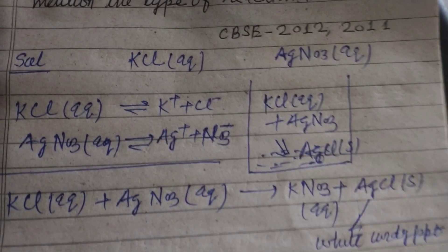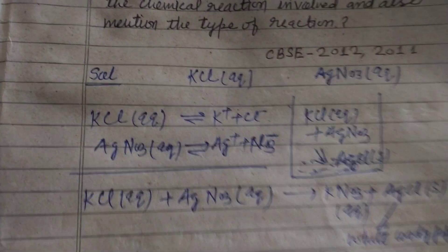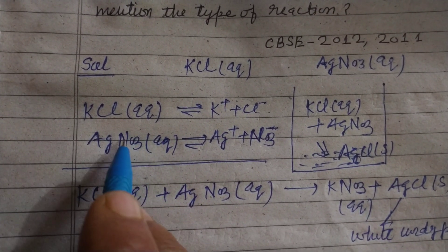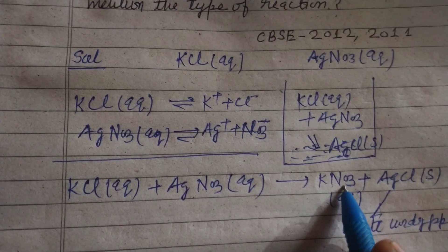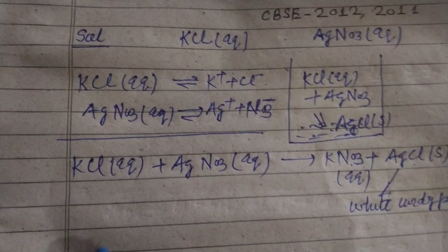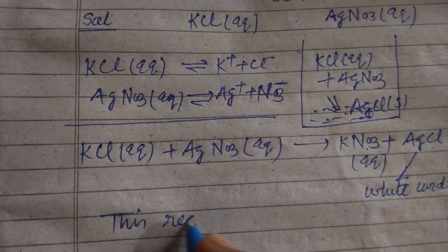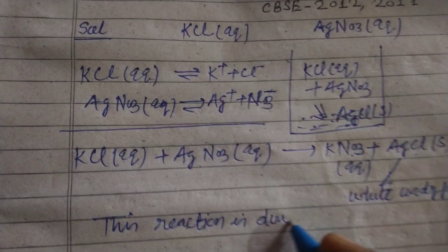And this type of reaction is called double displacement, since K is connecting with NO3 and Ag is connecting with Cl. So this reaction is double displacement reaction.